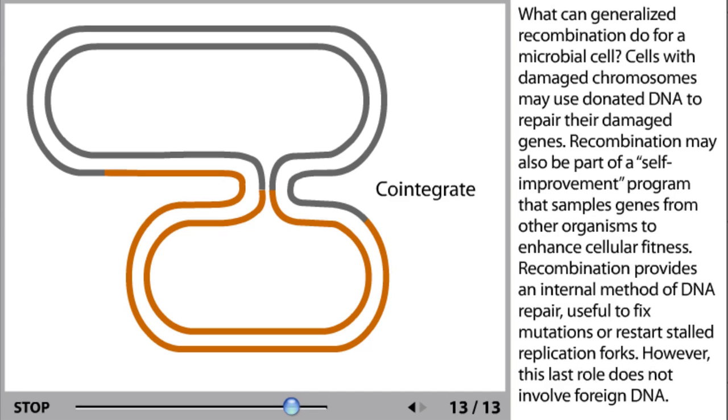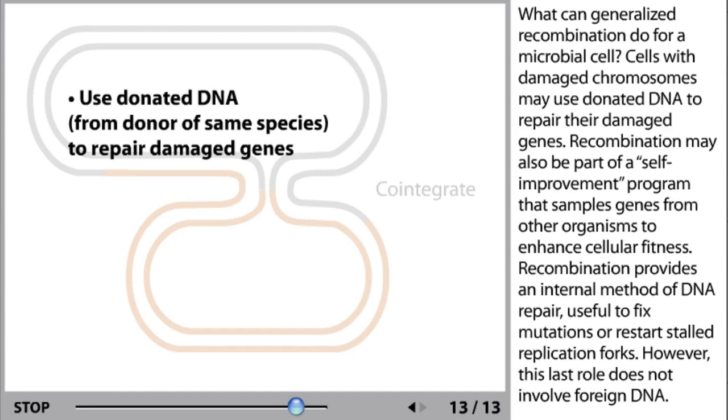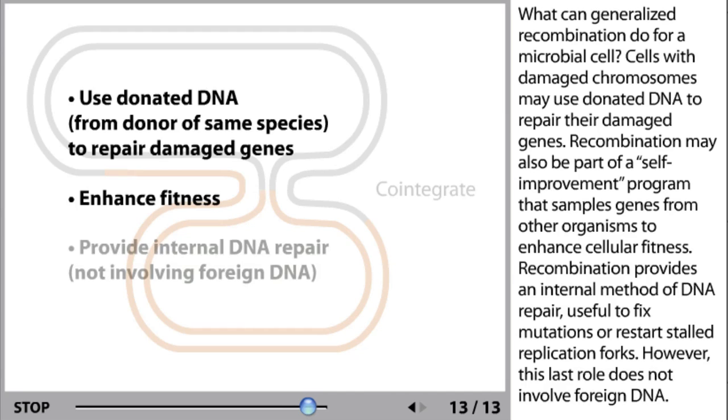What can generalized recombination do for a microbial cell? Cells with damaged chromosomes may use donated DNA to repair their damaged genes. Recombination may also be part of a self-improvement program that samples genes from other organisms to enhance cellular fitness. Recombination also provides an internal method of DNA repair useful to fix mutations or restart stalled replication forks. However, this last role does not involve foreign DNA.